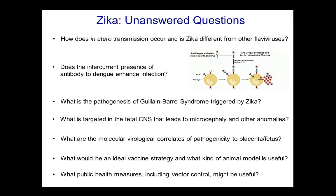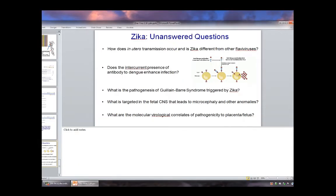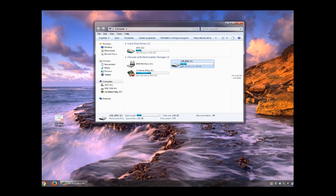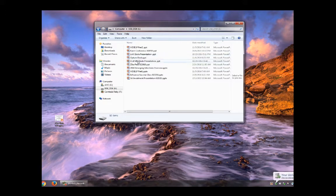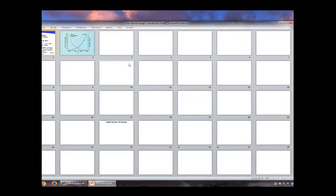Thank you, Mark. That was terrific. We'll hold questions until after Dr. Osterholm's talk. Many of you know him — he is visible on every epidemic we encounter. Mike is a Regents Professor, the McKnight Presidential Endowed Chair in Public Health, Director of the Center for Infectious Disease Research and Policy, and adjunct professor at the medical school. Dr. Osterholm: I'm going to try to set the table for where we've been, where we're at, and where we're going relative to this event. I gave my first talk on Zika infection in the Americas three years ago this month, suggesting it was just a matter of time before this was going to happen.